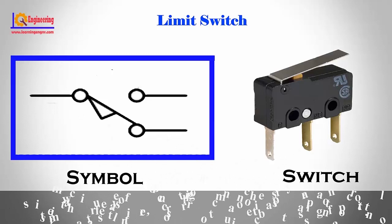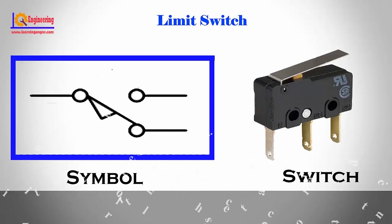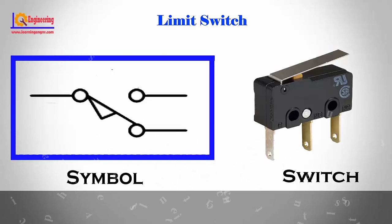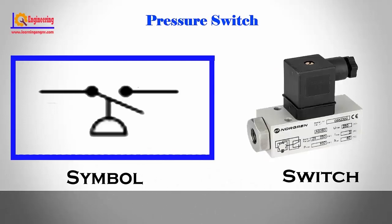Limit switch. Limit switches are used for controlling machinery as part of a control system, as safety interlocks, or to count objects passing a point. A limit switch is an electromechanical device that consists of an actuator mechanically linked to a set of contacts. When an object comes into contact with the actuator, the device operates the contacts to make or break an electrical connection.